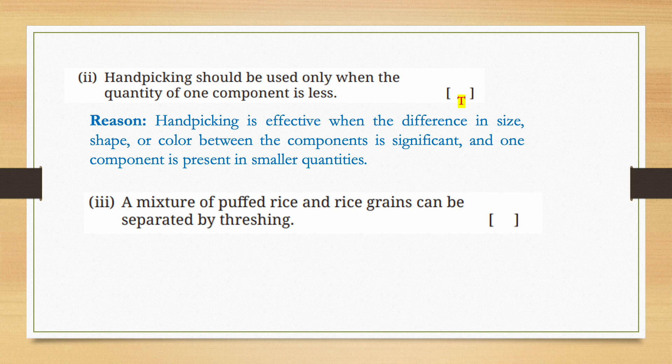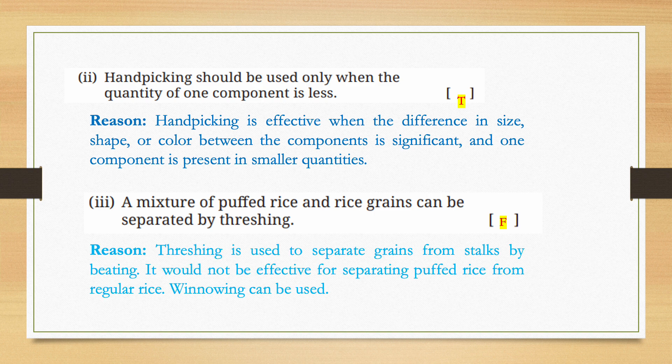A mixture of puffed rice and rice grains can be separated by threshing — is this possible? No, this statement is false. Threshing is used to separate grains from stalks by beating; it would not be effective for separating puffed rice from regular rice. Winnowing can be used instead.